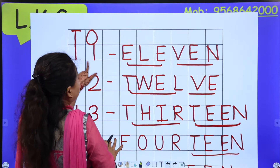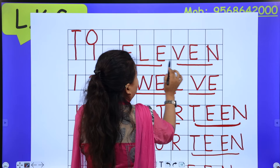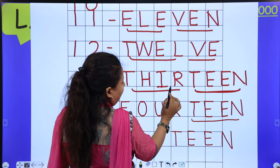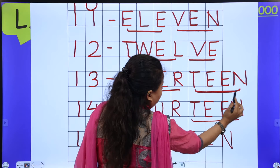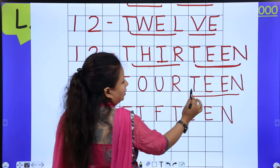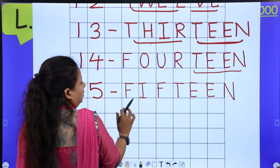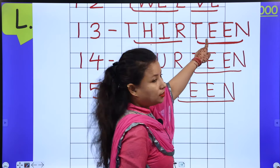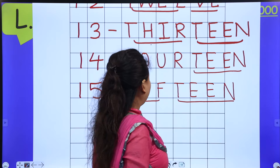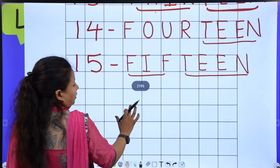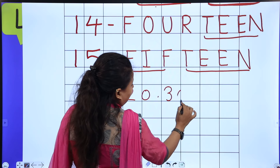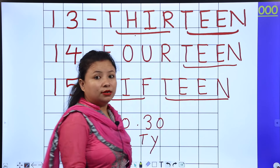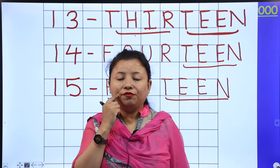Let's review: 11 is E-L-E-V-E-N, 12 is T-W-E-L-V-E, 13 is T-H-I-R-T-E-E-N, 14 is F-O-U-R-T-E-E-N, 15 is F-I-F-T-E-E-N. Notice that 13, 14, and 15 all end in T-E-E-N. Just like you say 20 and 30 end in T-Y, these numbers end in T-E-E-N.